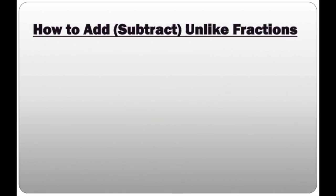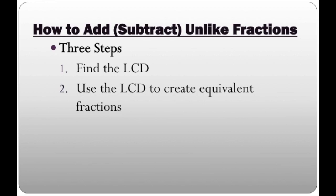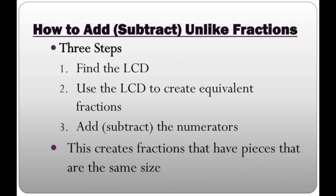So how exactly do you add or subtract unlike fractions? There are three steps. Step one: find the LCD, which we just went over — the LCD is nothing more than finding the least common multiple of the denominators you have. Step two: use the LCD to create equivalent fractions. And step three: add or subtract the numerators. This creates fractions that have pieces that are the same size, and that's exactly what you need before you can add or subtract fractions.